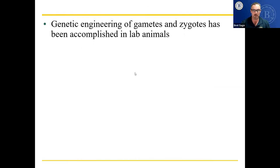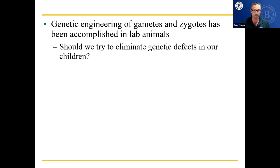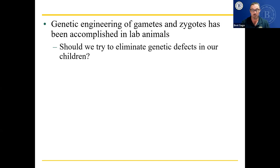Genetic engineering of gametes and zygotes has been accomplished in lab animals. A scientist in China recently claimed to have done it with human beings, but the research hasn't been replicated or validated. If they can do it with mice — and the basic biology of a mouse and a human are similar, which is why we use mice to test drugs — it's probably possible in humans. If you can genetically modify a mouse to contain a gene for glowing in the dark from a jellyfish, which they have done, and when you turn off the lights these genetically modified mice glow in the dark — could you do that in people? Probably.